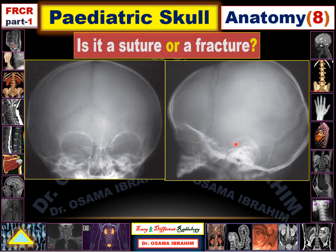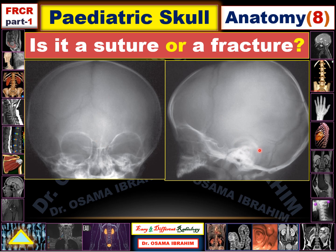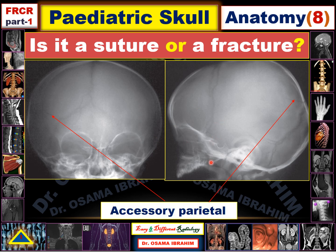Another case to determine suture or fracture. The coronal sutures, lambdoid sutures, squamosal sutures, and occipitomastoid sutures are identified. In the anteroposterior view, the sagittal and lambdoid sutures are also seen. There is one additional suture visible that does not extend to the temporal bone — this is considered an accessory parietal suture, not a fracture.